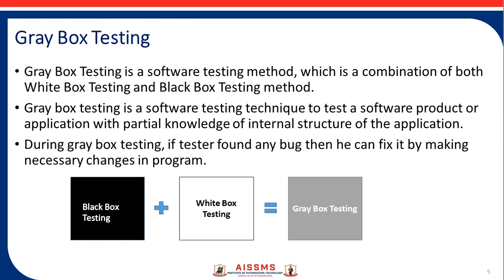Next is gray box testing. Gray box testing is a combination of white box testing and black box testing methods. It is a software testing technique used to test a software product or application with partial knowledge of the internal structure of the application. During gray box testing, if the tester finds any bug, he can fix it by making necessary changes to the program. This diagram shows gray box testing as a combination of black box and white box testing.